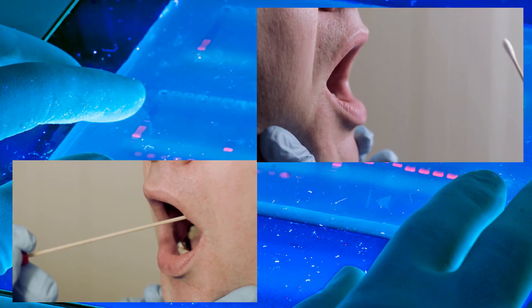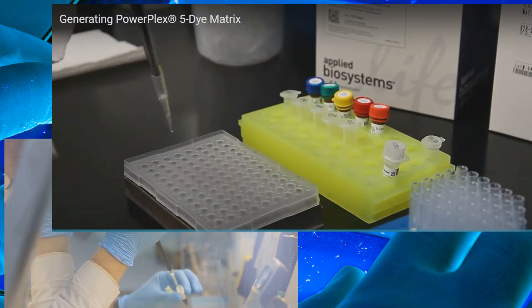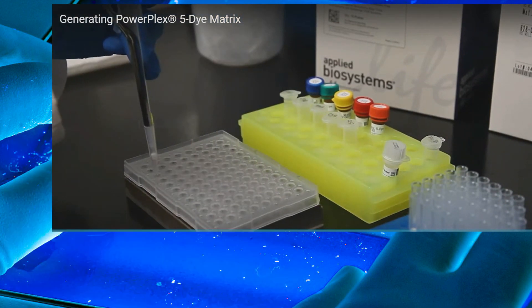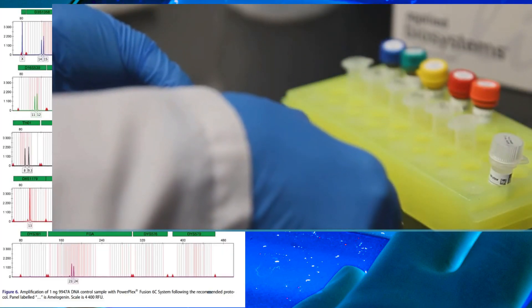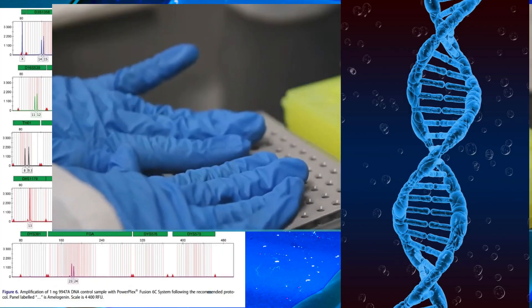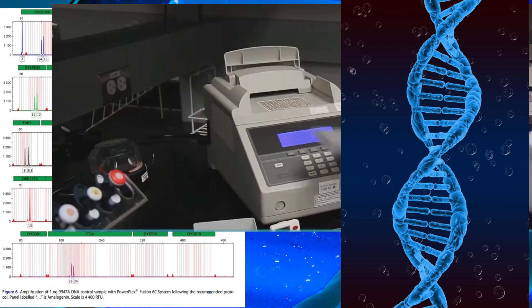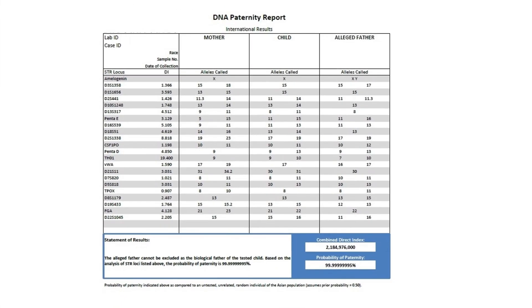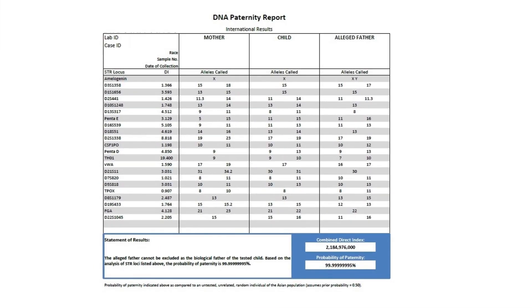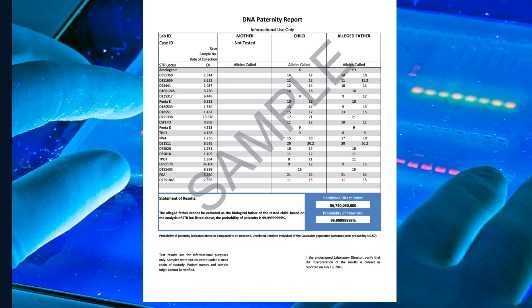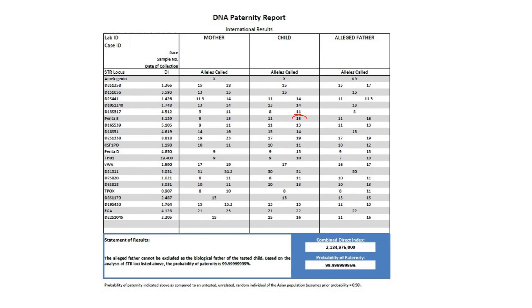The genetic system table contains all the data results in the report. The laboratory tests body fluids or tissue of the mother, child, and alleged father to locate certain pieces of DNA which may differ from person to person. The location of a particular piece of DNA along the entire chain is called a locus, and the laboratory finds the locus by using a chemical called a primer. The report shows numbers in the first column of the chart to indicate each locus that was tested.